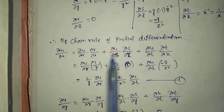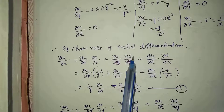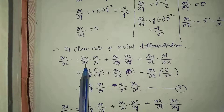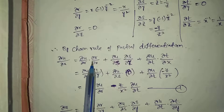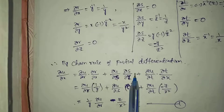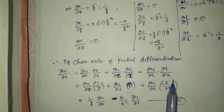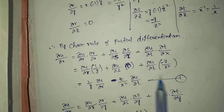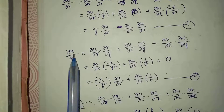By the chain rule of partial differential equations: ∂u/∂x = (∂u/∂r)·(∂r/∂x) + (∂u/∂s)·(∂s/∂x) + (∂u/∂t)·(∂t/∂x). Substituting the values: ∂r/∂x = 1/y, ∂s/∂x = 0, ∂t/∂x = -z/x². Therefore: ∂u/∂x = (1/y)·(∂u/∂r) - (z/x²)·(∂u/∂t). This is equation 1.